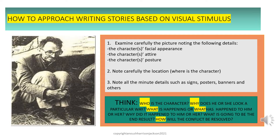To write stories based on a visual stimulus, you first have to examine carefully the picture, noting the following details: one, the character's facial appearance; two, the character's attire; three, the character's posture. Also note carefully the location — where is the character? Is he at a hotel, in a cab, in a truck? Note all the minute details such as signs, posters, banners, and others.